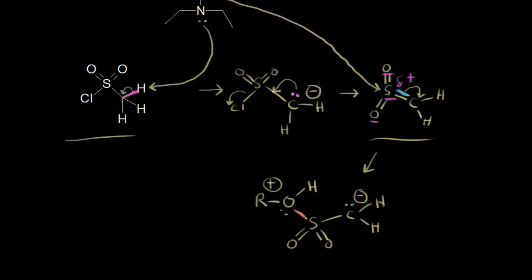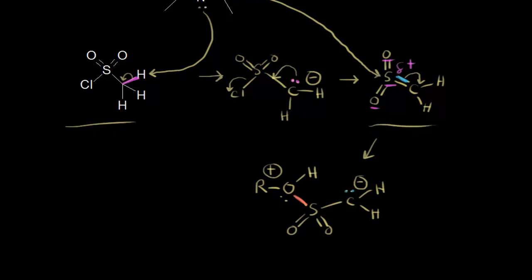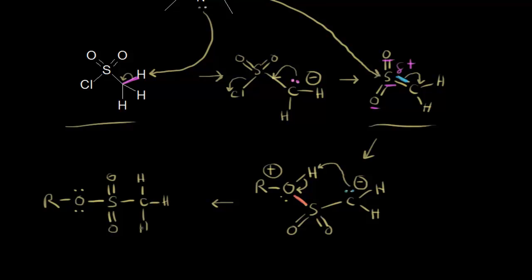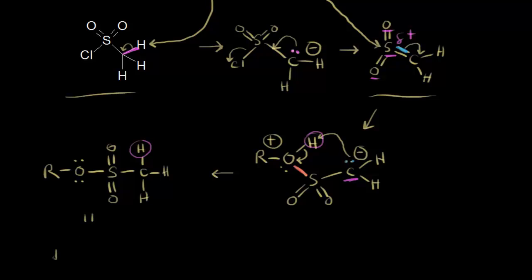In the last step of our mechanism, the carbanion is going to function as a base. This lone pair of electrons is going to take this proton, leaving these electrons behind on our oxygen. We would have an R group, an oxygen with two lone pairs of electrons, bonded to a sulfur double bonded to this oxygen and double bonded to this oxygen, and then we would have a CH₃ group — because this carbon picked up the proton. We formed our mesylate. We could just abbreviate it as RO-Ms. That's how to form mesylates and tosylates, which are excellent leaving groups.